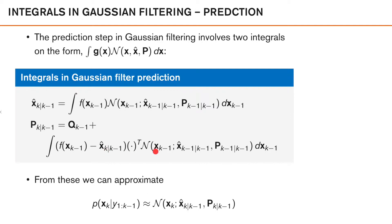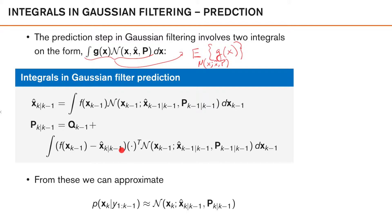Please note that both these integrals are expected values, and we can view, for instance, this integral as the expected value of g, where x is distributed according to this Gaussian distribution. With this in mind, it might be a bit easier to understand the implications of the integrals. So we have an expected value here, and then we have the covariance, which can be expressed in terms of the expected value of this function. Once we have computed or approximated these integrals, we approximate the predicted density using moment matching as a Gaussian with the mean and covariance that we get from these expressions.